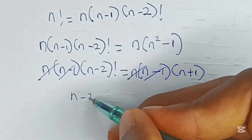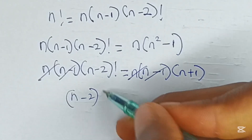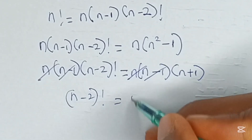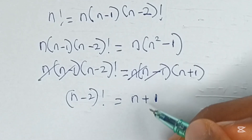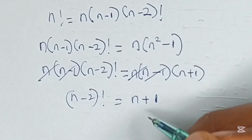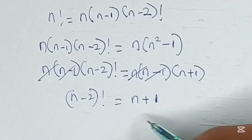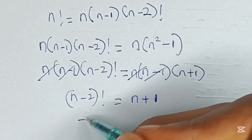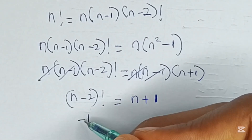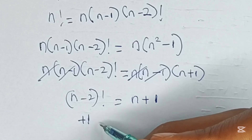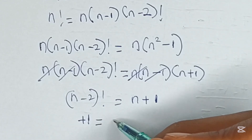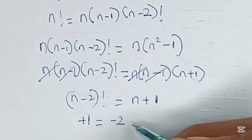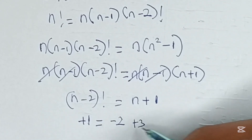So we are left with n minus 2 factorial to be equal to n plus 1. Now, 1 plus 1 can be expressed to be equal to minus 2 plus 3.